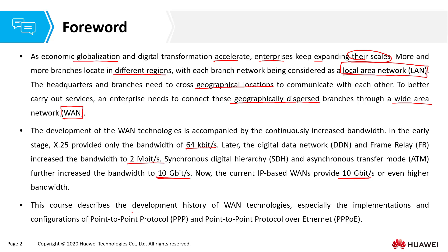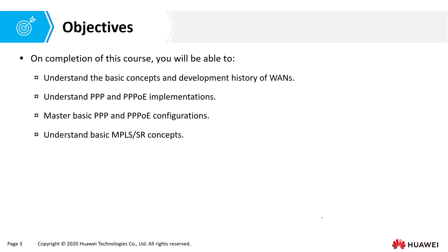In this chapter, we describe the development history of wide area network technologies, especially the implementations and configurations of point-to-point protocol over Ethernet. Upon completion of this chapter, you'll be able to understand the basic concepts and development history of wide area networks, as well as the implementation and configuration of both point-to-point protocol and point-to-point protocol carried over Ethernet.